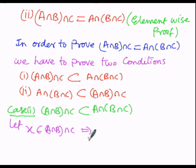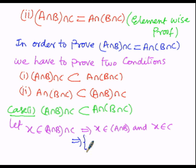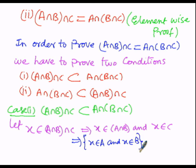x belongs to A intersection B — that is the first bracket — and x also belongs to the second set C. So we can write it as: x belongs to A intersection B, and x belongs to C. We can elaborate further: x belongs to A intersection B means x belongs to A and x belongs to B, and x belongs to C.